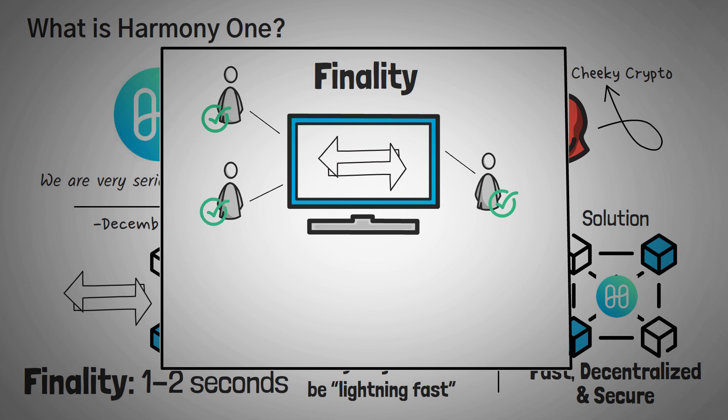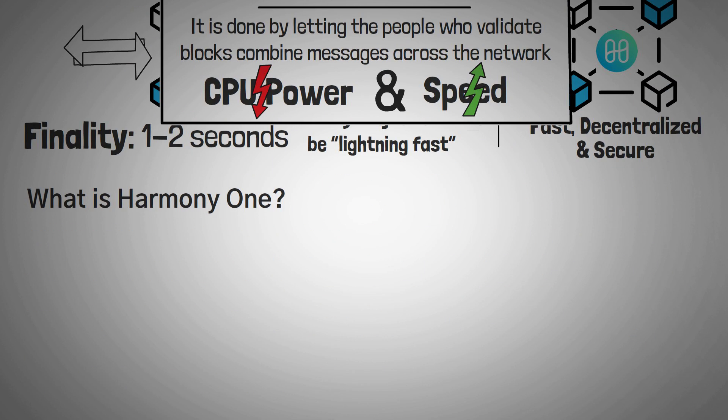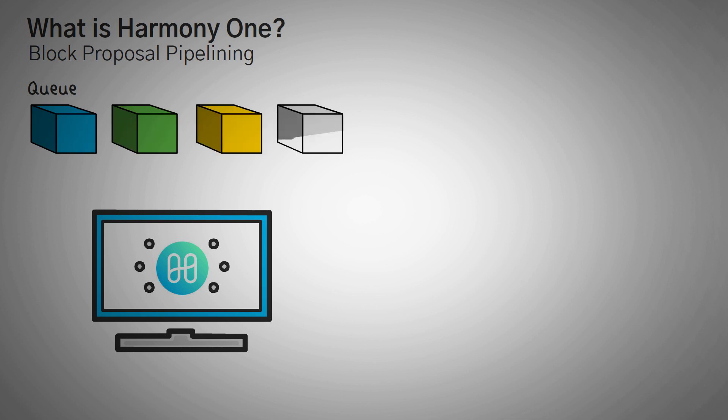Now, Harmony 1 achieves this quick finality by letting people who validate blocks combine messages across the network, which reduces the amount of CPU power required and increases overall speed. They also use something called block proposal pipelining, which is a fancy term for letting the network to start validating blocks before other ones are technically finished.